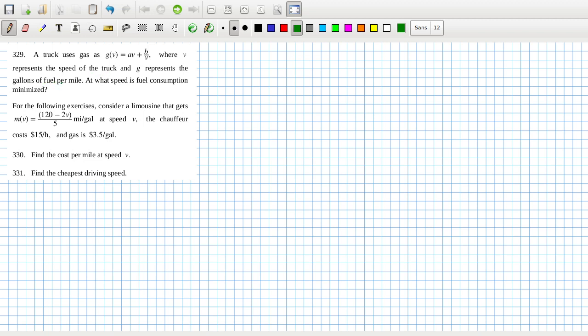Gallons of fuel per mile. I want the speed where the fuel consumption is minimized. Okay, so g'(v) equals a minus b over v squared, and we want that to equal zero. So that means v would equal root b over a.